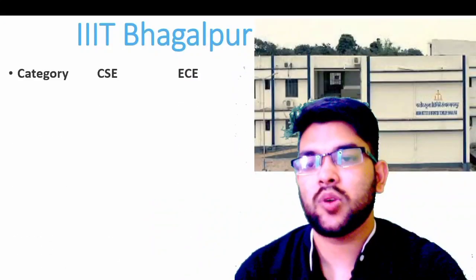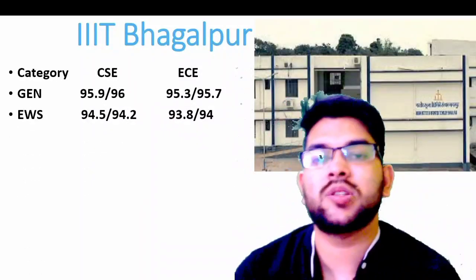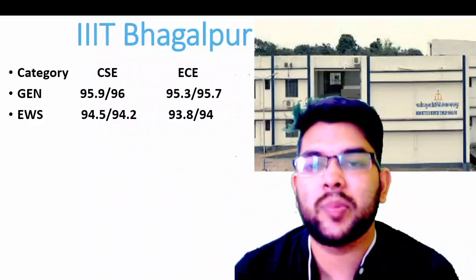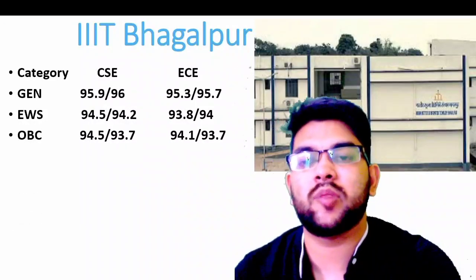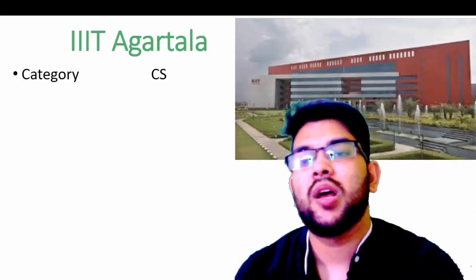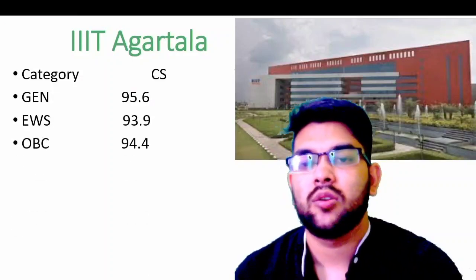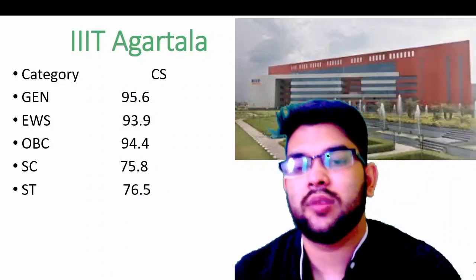For the next IIIT: General — male 95.9, female 96. EWS — male 94.5, female 94.2. Again, there is no home state/other state quota in IIITs — only one cutoff applies to everyone. OBC — male 94.5, female 93.7. SC — 76. ST — male 75.5, female 76.5.